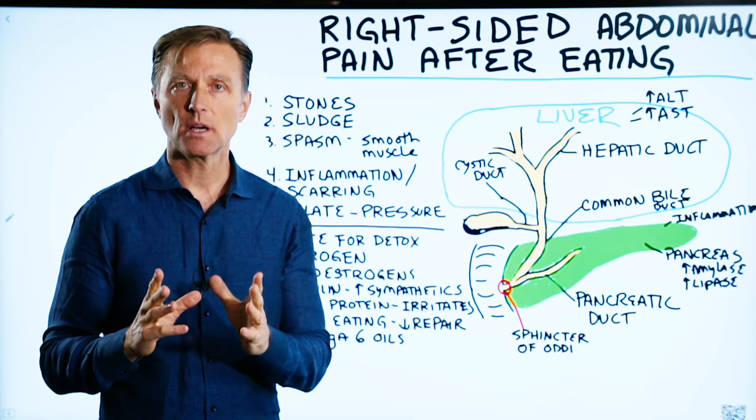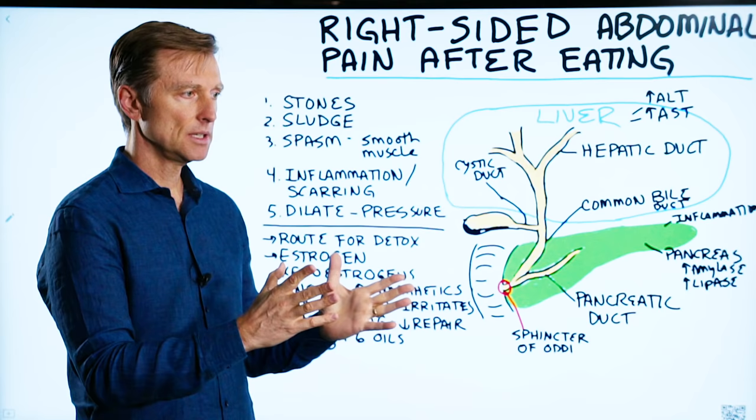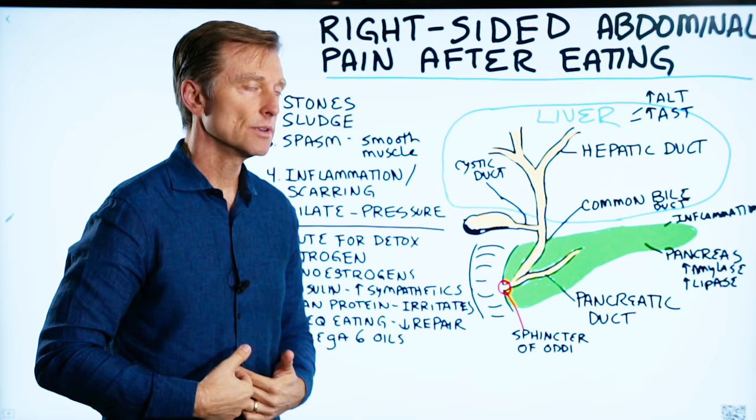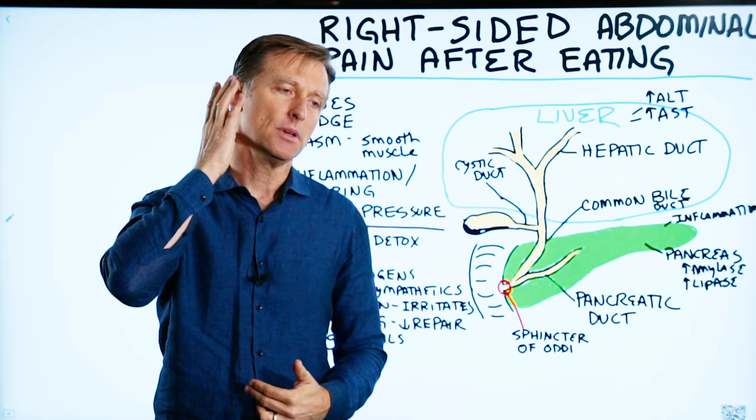Today we're going to talk about right-sided abdominal pain after you eat. Let's say you just ate a meal and you have this pain underneath your right rib cage right through here. Sometimes it can refer to the upper shoulder, into the scapula back here, up into the neck, maybe even a headache on the right side — what is going on?